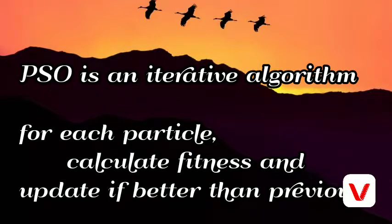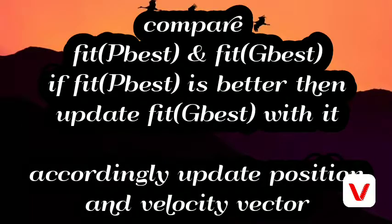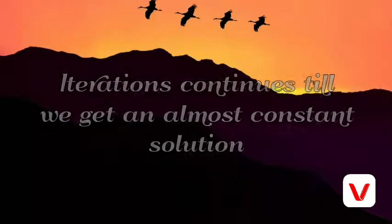PSO is an iterative algorithm. For each particle, calculate fitness and update if fitness is better than the previous one. Compare the fitness of PBEST and the fitness of GBEST. If the fitness of PBEST is better, then update GBEST with it. Accordingly, update the position vector and velocity vector.